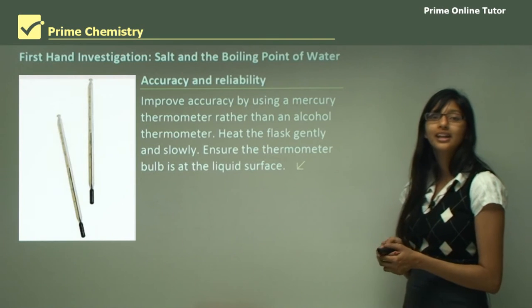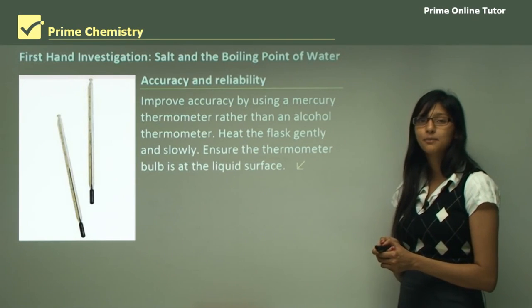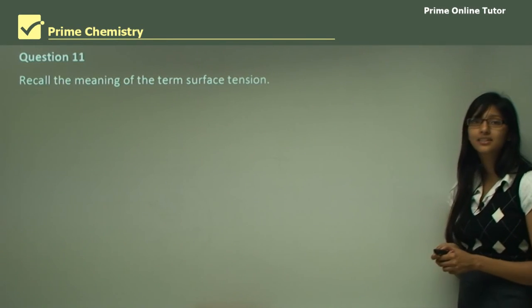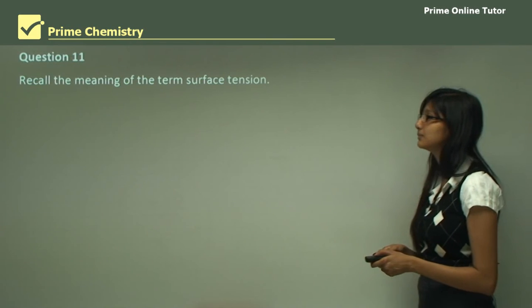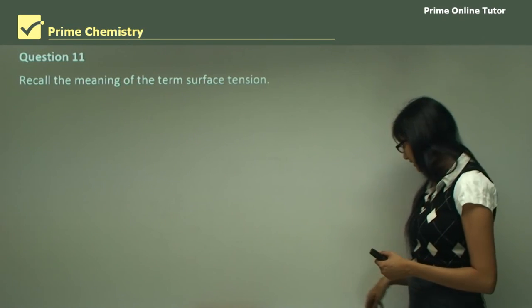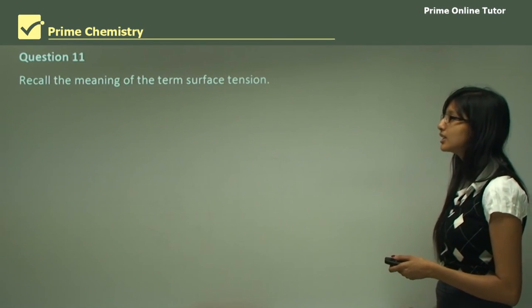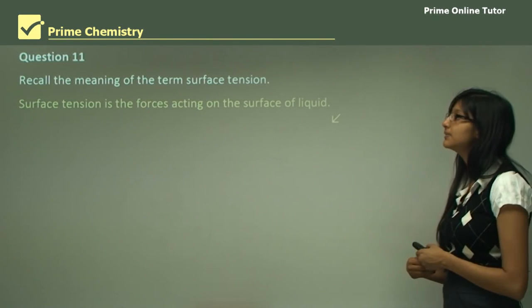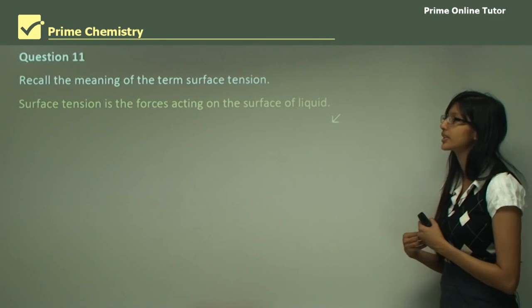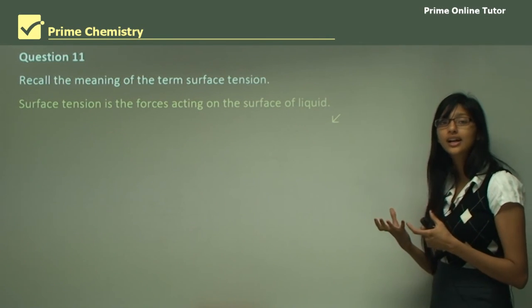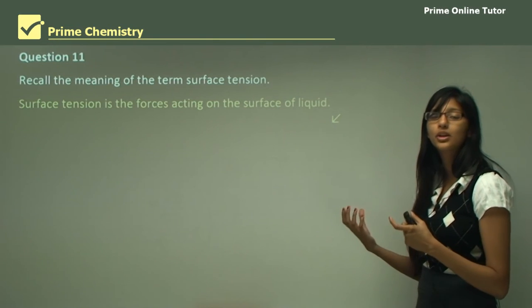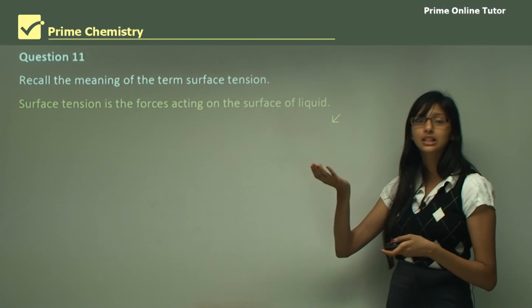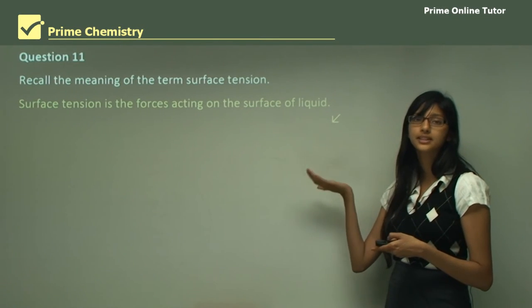This brings us to the end of the theory session. Let's look at some questions to test your knowledge. Question 11 asks you to recall the meaning of the term surface tension. You only need to remember what surface tension means. Surface tension is the forces acting on the surface of a liquid — water molecules exert an upward force to the surface of the liquid, which causes the liquid to have a surface tension.